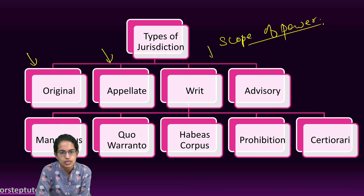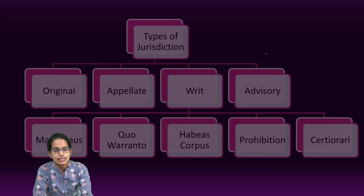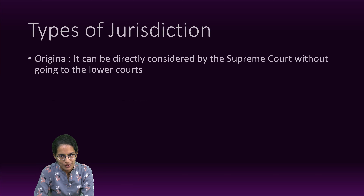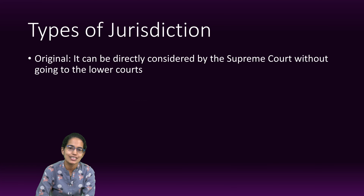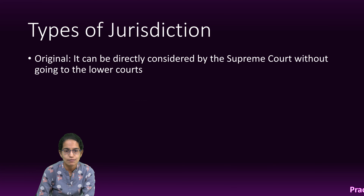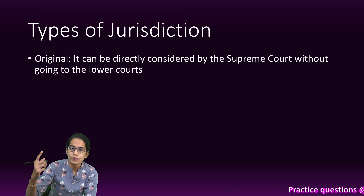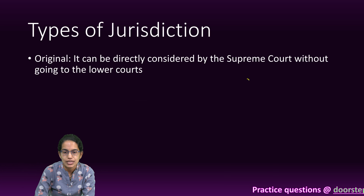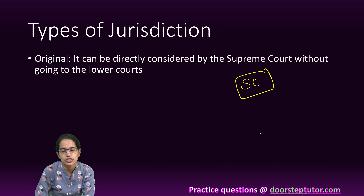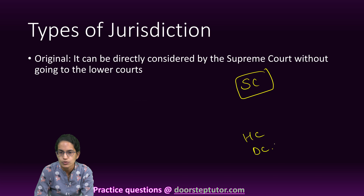What are the various types of jurisdictions? The scope of power of the Supreme Court in India is understood through four different elements. Those are original jurisdiction, appellate jurisdiction, writs, and advisory jurisdiction. Let's understand these one by one.